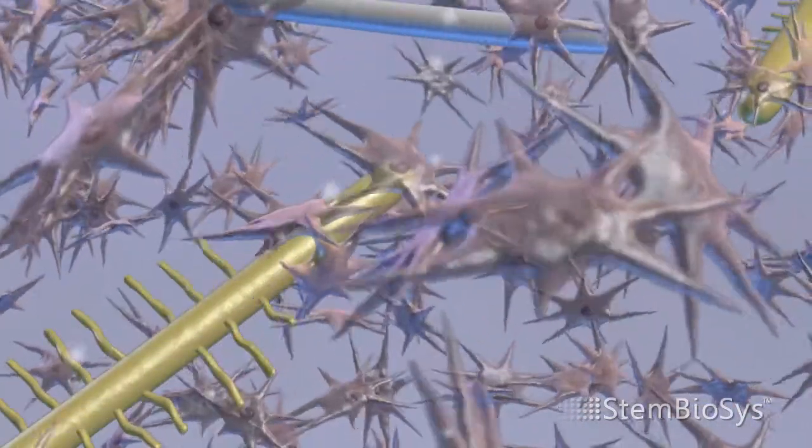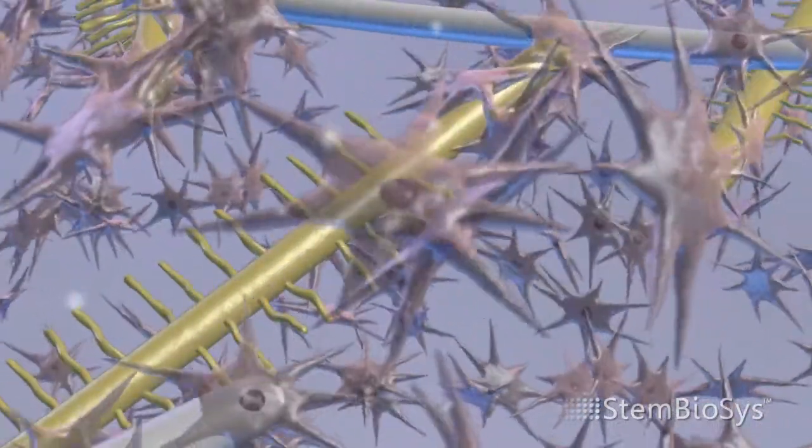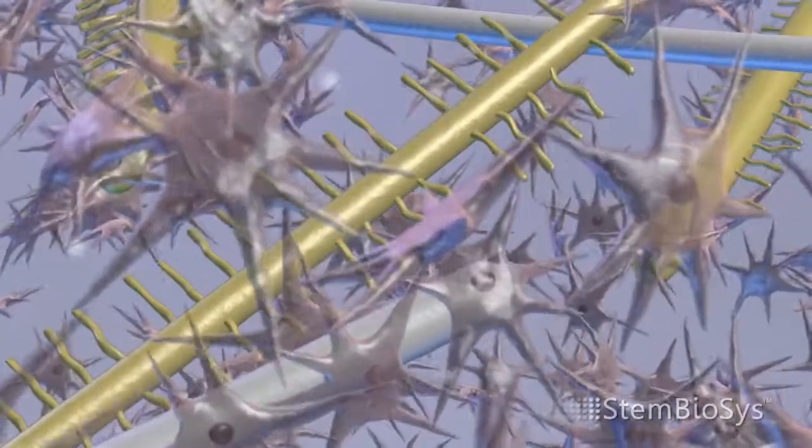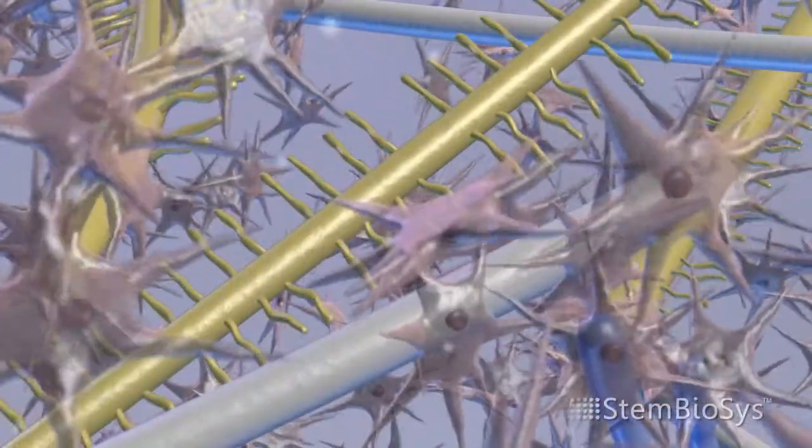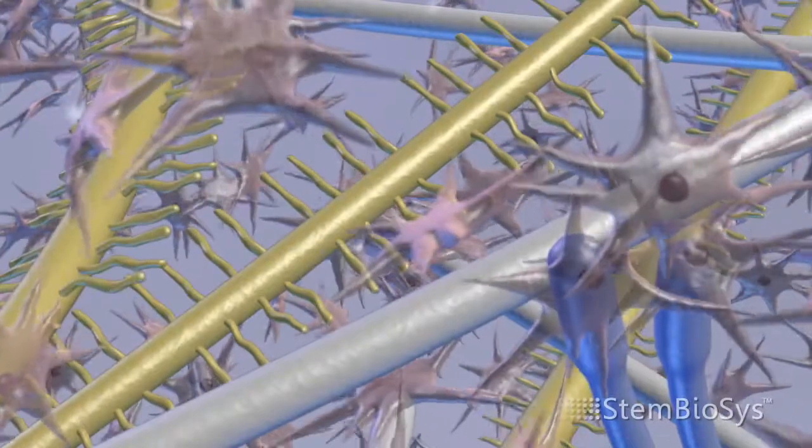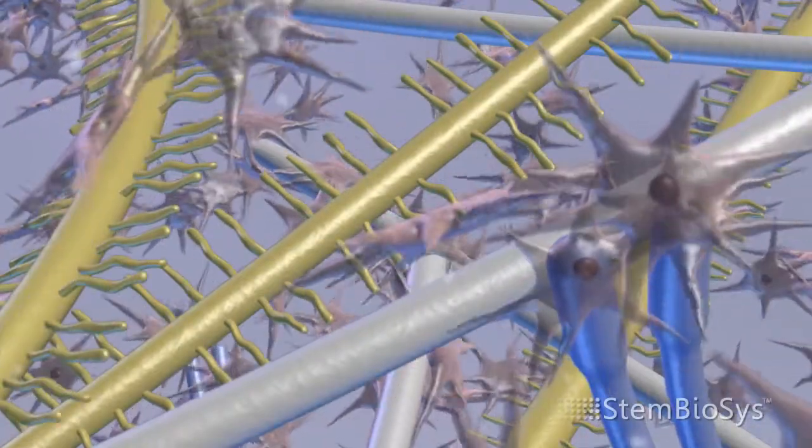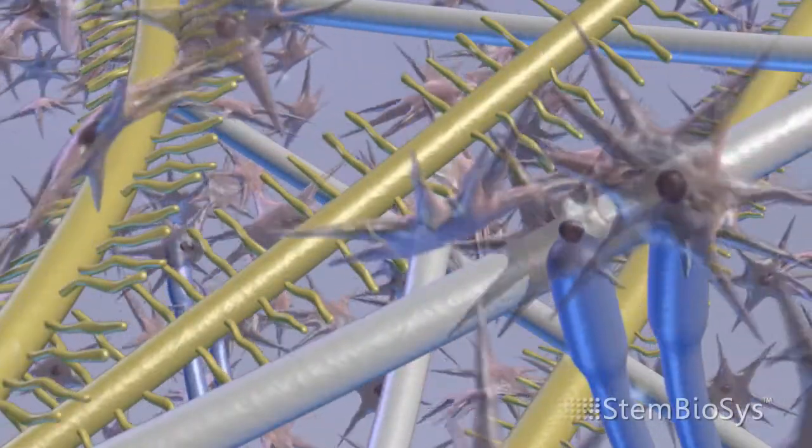The cells are then stimulated to produce an extracellular matrix. These matrix proteins are deposited in a defined and ordered three-dimensional structure, a home built by the bone marrow cells in a fashion similar to what they do in their native bone marrow.